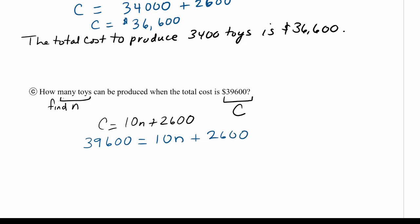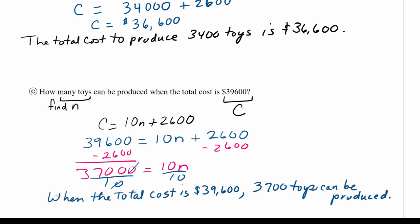So we'll do a little bit of algebra here, subtracting the 2,600 from both sides since we're trying to solve for n. And these numbers are nice. Somebody was very kind to us. And we're going to divide by 10, which crosses off one of those zeros. And so the conclusion, when the total cost is $39,600, 3,700 toys can be produced.